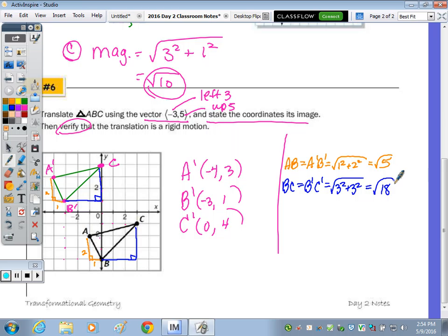And the last length is from A to C, and A prime to C prime. That's a 1 by 1, 2, 3, 4. And this is also a 1 by 1, 2, 3, 4. So AC is equal to A prime C prime, and both are 1 squared plus 4 squared, which is square root of 17.